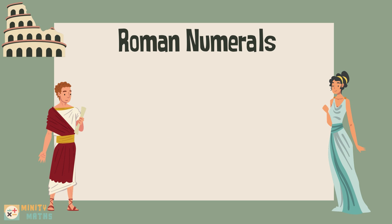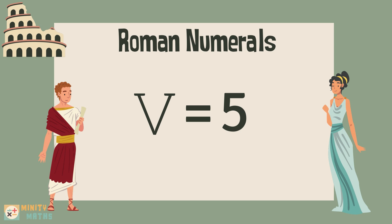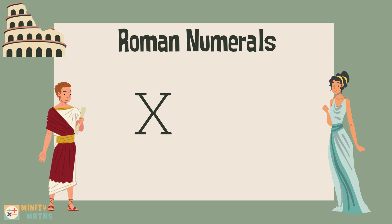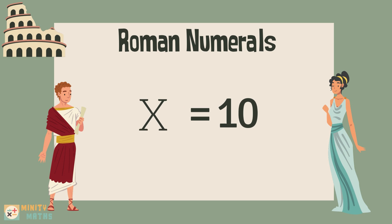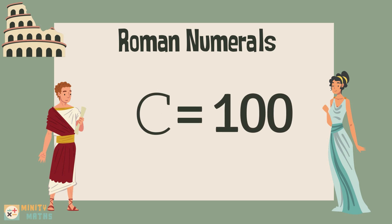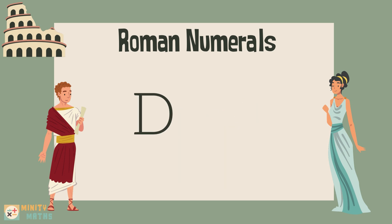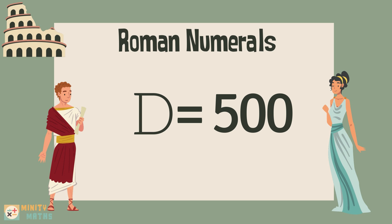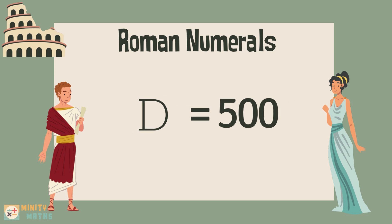The first Roman numeral is I, which represents the number 1. The next numeral is V, which represents 5. X represents 10. L represents 50. C represents 100. D represents 500. And M represents 1000.